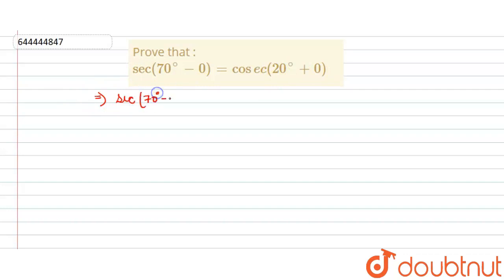Sec of 70 degrees minus 0 equals cosec of 20 degrees plus 0. Now, this is 0, so we can simply write this equation as sec of 70 degrees equals cosec of 20 degrees.